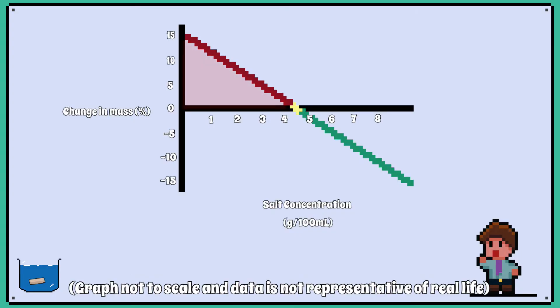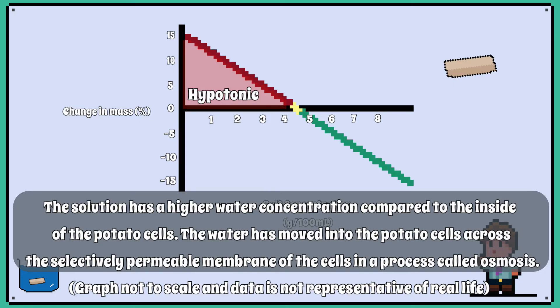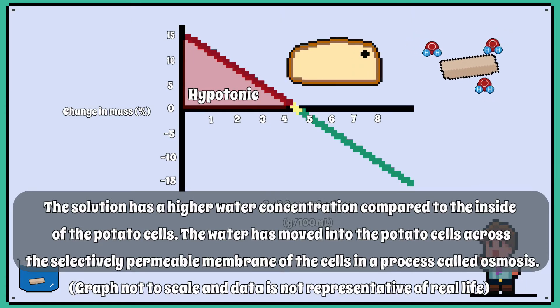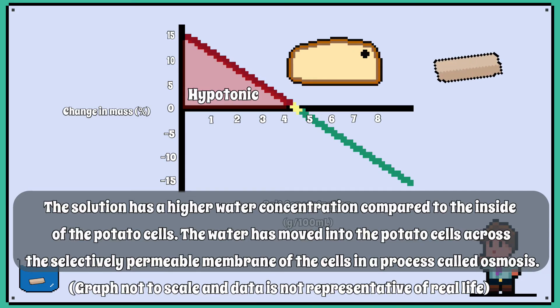If the potato mass has gone up after being in the solution, then the solution has a higher water concentration compared to the inside of the potato cells. The water has moved into the potato cells across the selectively permeable membrane of the cells in a process called osmosis. The scientific term for a solution that has a higher water concentration than the inside of the cell is a hypotonic solution.